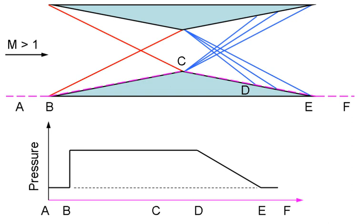Busemann's biplane is a conceptual airframe design invented by Adolf Busemann which avoids the formation of N-type shock waves and thus does not create a sonic boom.